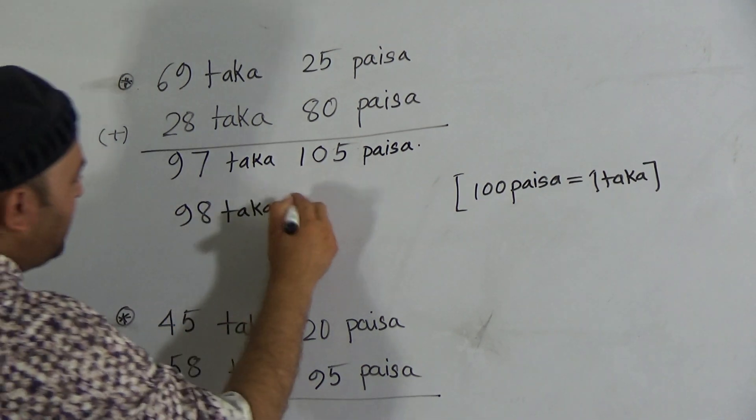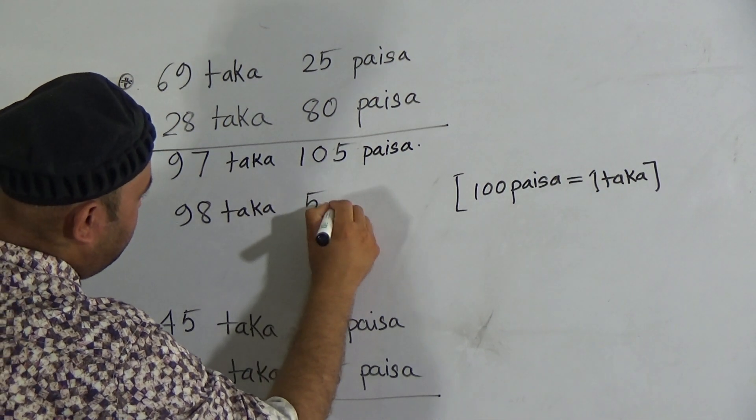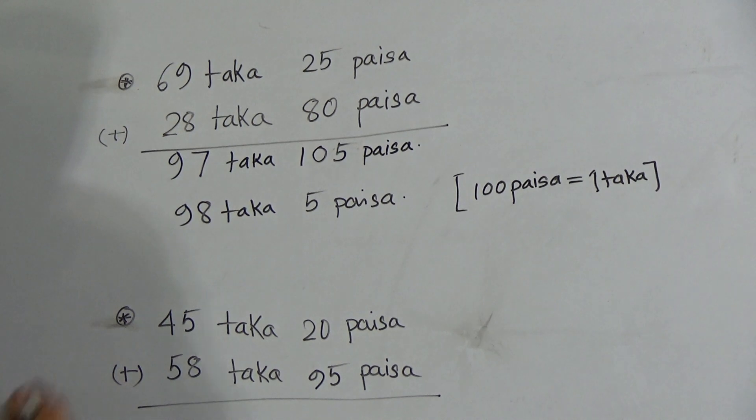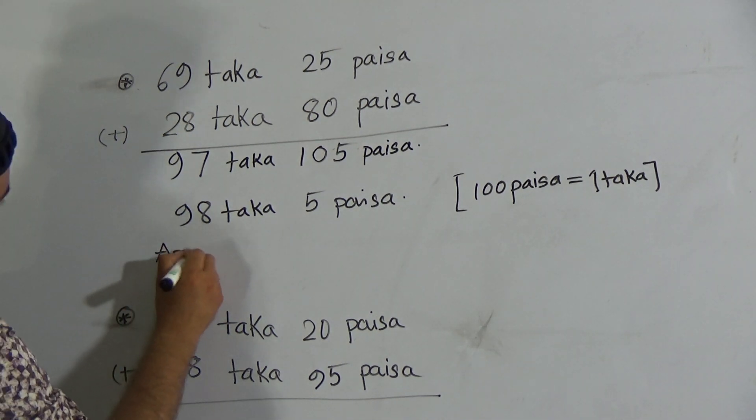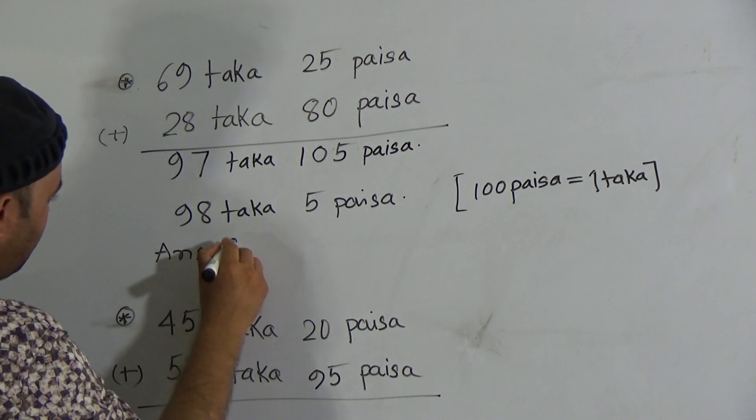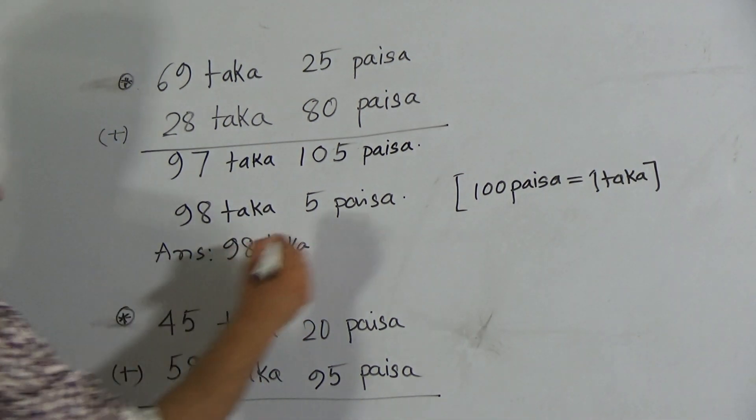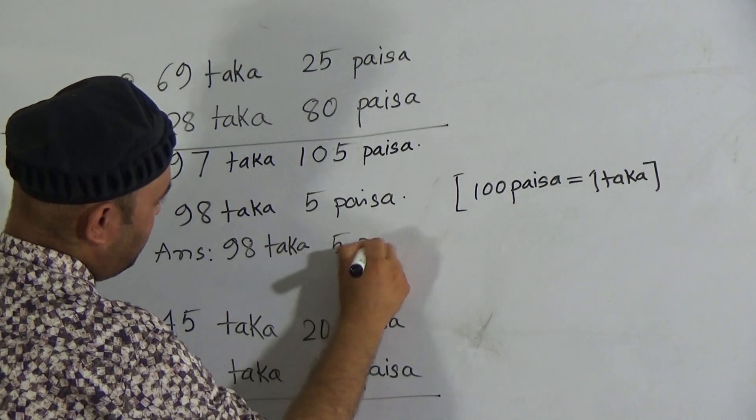And here is remaining 5 paisa. So the answer will be 98 taka and 5 paisa.